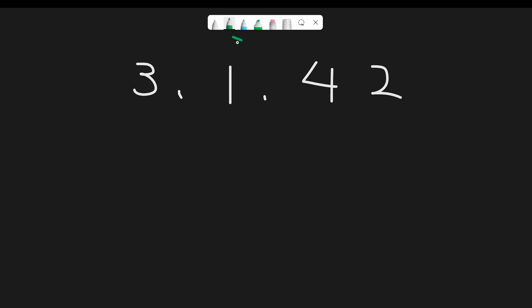To clarify: if index i points to 1, j points to 4, and k points to 2, we return true. This is easy since the three numbers are adjacent. But even if 1 is at index 0 and 3 is at index 1, we still return true because we still meet the 1-3-2 pattern condition.